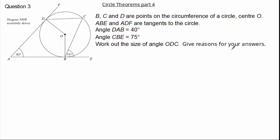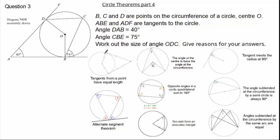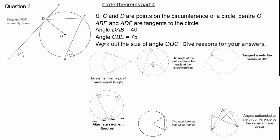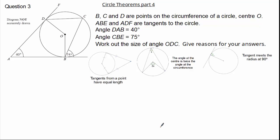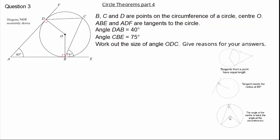So let's have a look at our circle theorems and extract as much information from our question and diagram to determine which circle theorems we can use. Here you can see we have no diameter, no cyclic quadrilateral, no angles subtended by the same arc, no alternate segment theorem, and no triangles made from radii. Therefore it leaves us with three potential circle theorems. It's clear we can use tangents meet the radius at 90 degrees. Therefore angle ADO is 90 degrees and angle ABO is 90 degrees, because tangents meet the radius at 90 degrees.